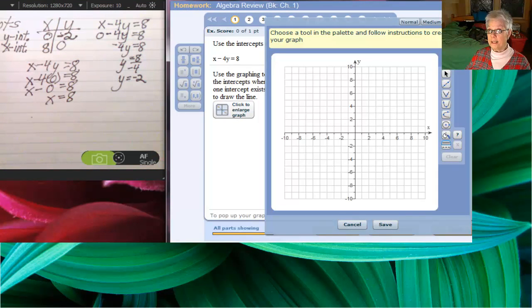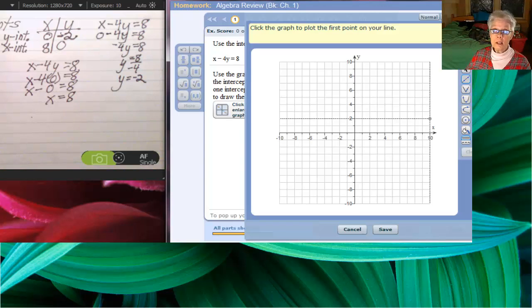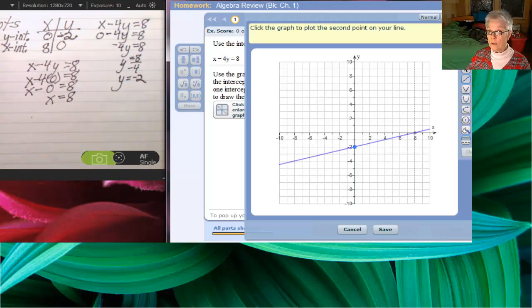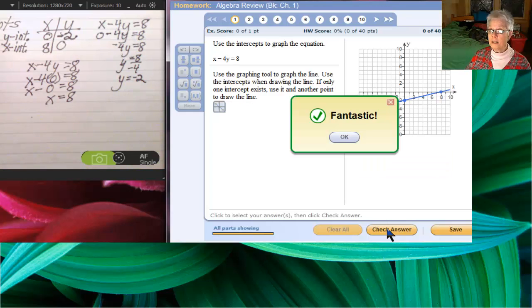Now, let's graph this. I'm going to click on the magnifying glass icon and click on medium. I'm going to click on the line tool. I'm going to find zero negative two and then eight zero. I click on those, save the line, check my answer, and we were correct.